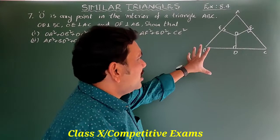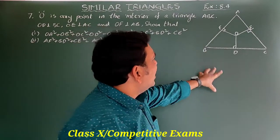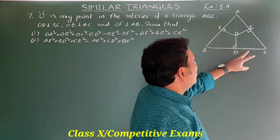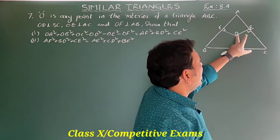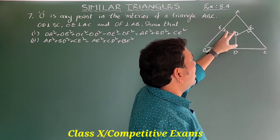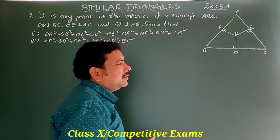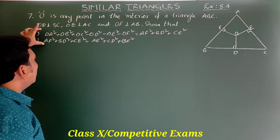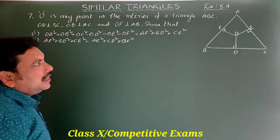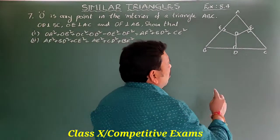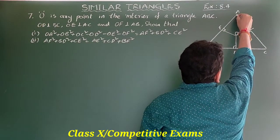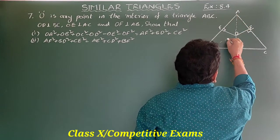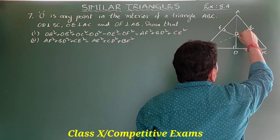In this figure, in triangle ABC, OD is perpendicular to BC, OE is perpendicular to AC, and OF is perpendicular to AB. For the proof, first join OA, OB, and OC.